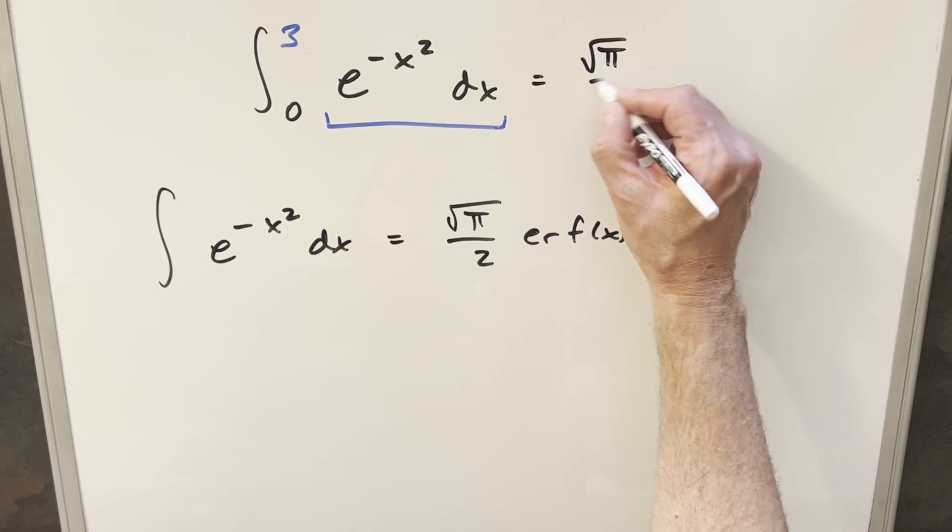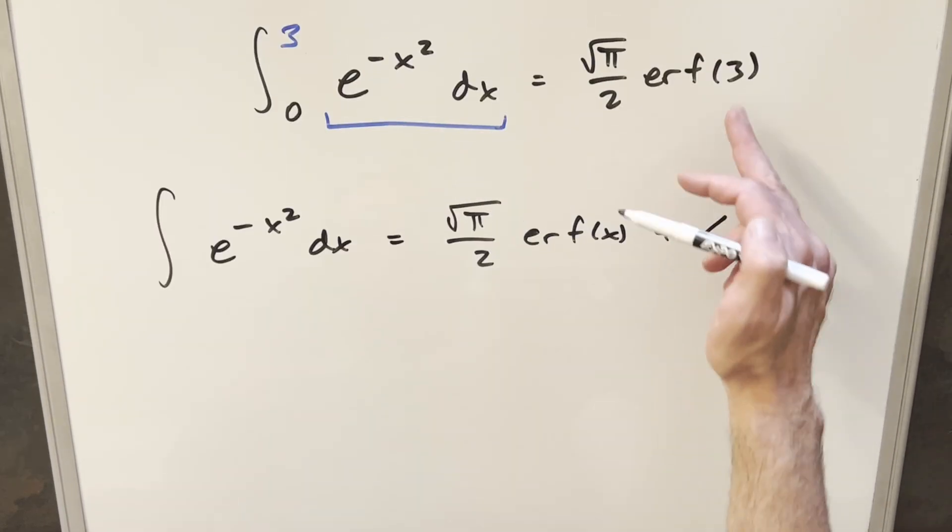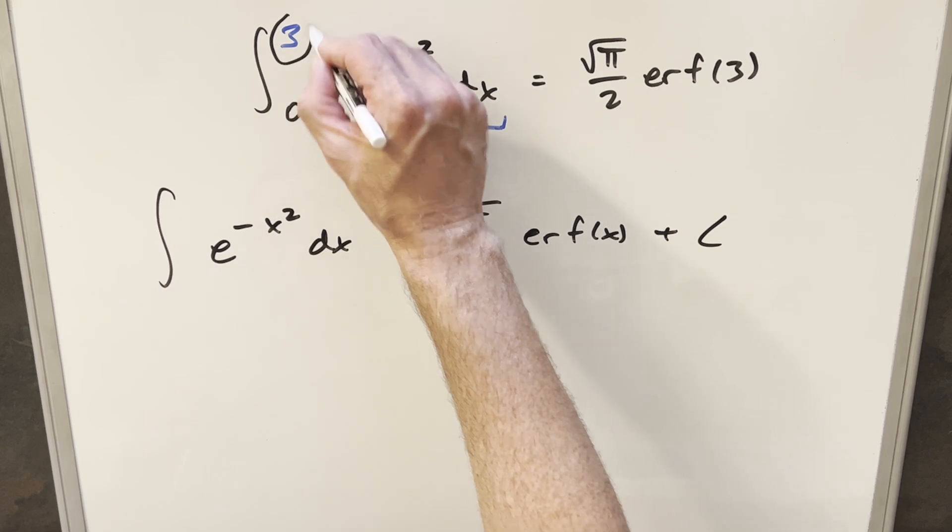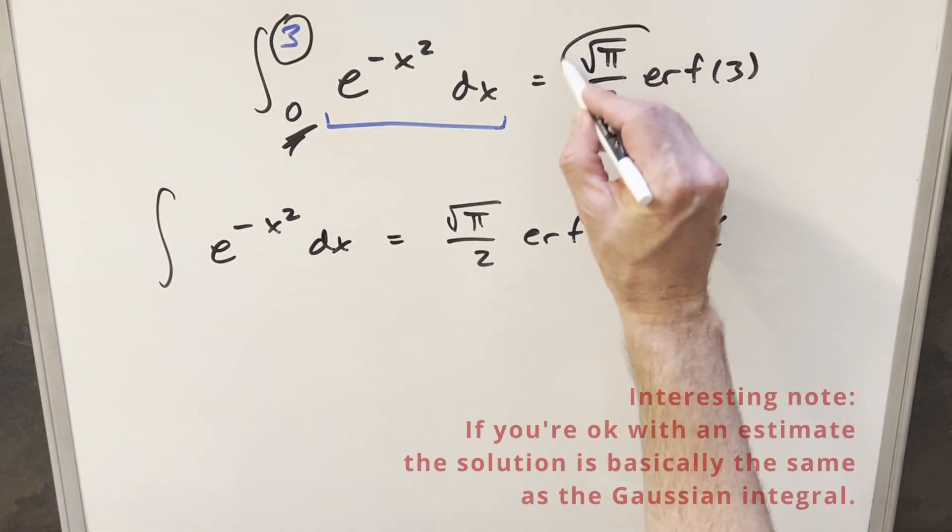This is just going to be square root of pi over 2 error function at 3, where the input here just comes from our upper bound, assuming that the lower bound is 0. And so we have this for our solution.